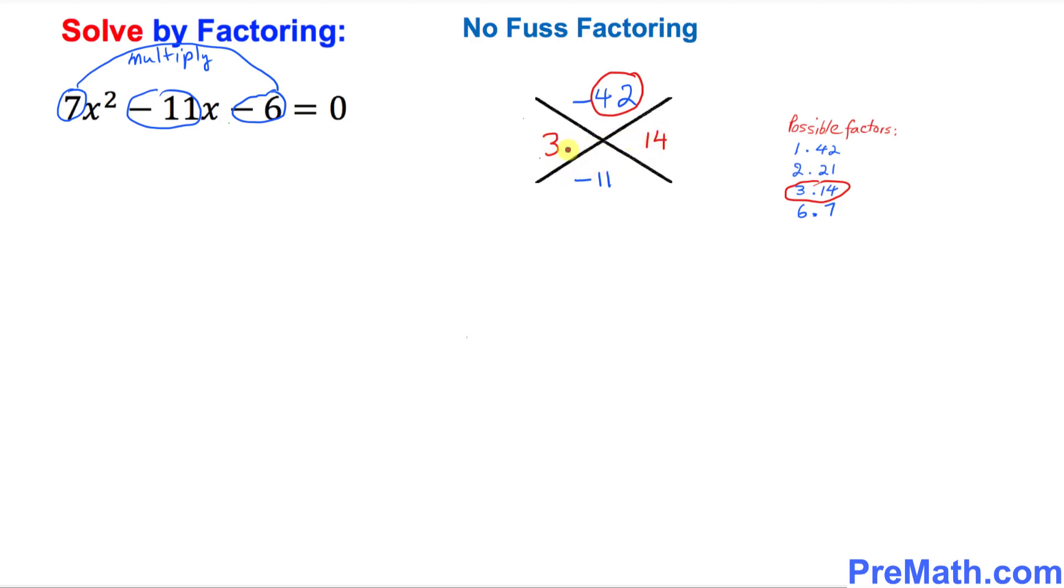Now we need to fix their signs. Since we have got a negative 11, this number is going to be negative. This number is going to be positive 3. So we got positive 3 and negative 14. These are our two factors. If you add them up, that's going to give you negative 11. And if you multiply them, you're going to get negative 42.